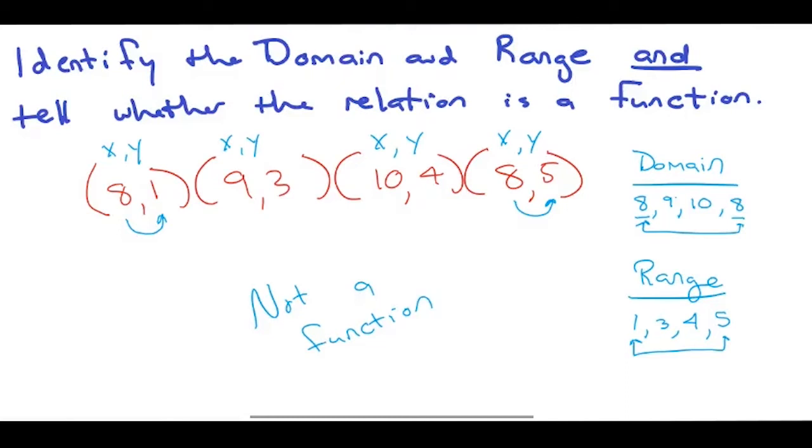I also want to point out that when you write out the domain or range, you want to put them in numeric order from least to greatest. And if a number repeats, you don't actually want to include that as part of your list twice. You only want to add it one time.